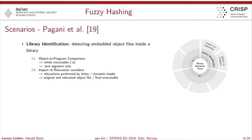In the object-to-program comparison, you compare a whole object file — or only the text segment — with the final executable. In the relocation subtask, you compare the original or relocated object file with the final executable, accounting for relocations performed by a linker or a dynamic loader.